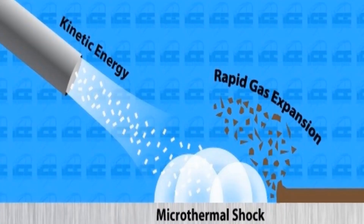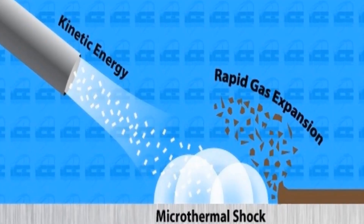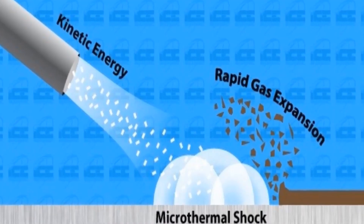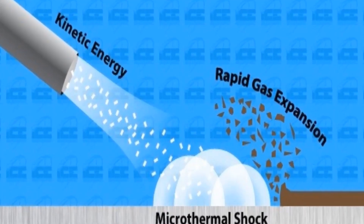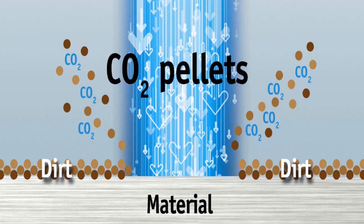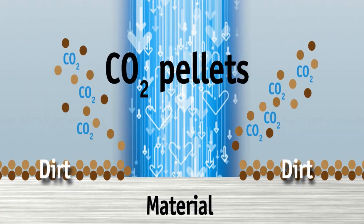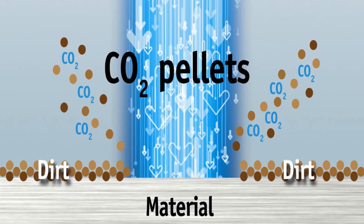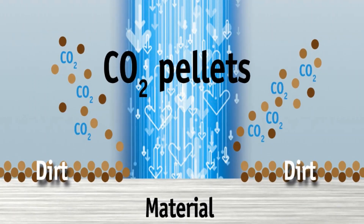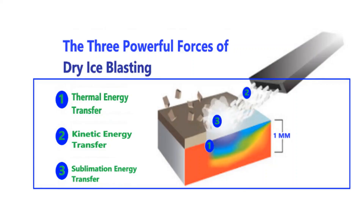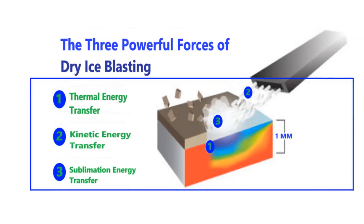Three rapid effects that occur in milliseconds. Stage 1 effect: Thermal shock. The first thermal shock stage of the dry ice blasting process results in the rapid freezing of the surface contaminants, causing them to become brittle and fractured.